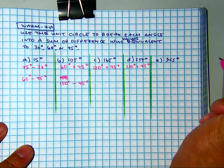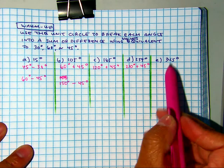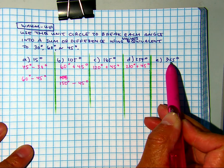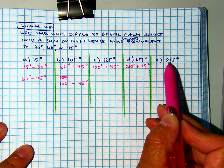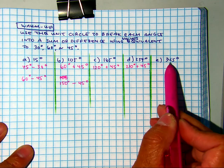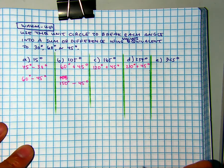Can I do 360 minus 15? No. Remember, 15 is not on your unit circle, so you can't use it. Although 360 minus 15 gives you 345, 15 is not on your unit circle.